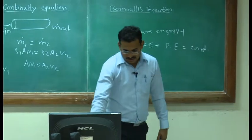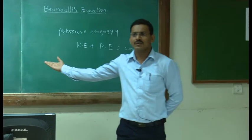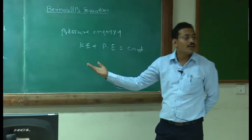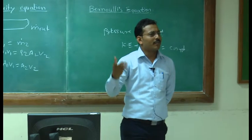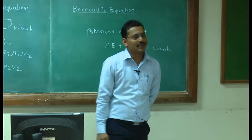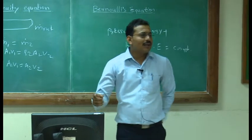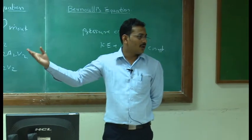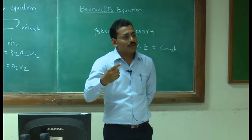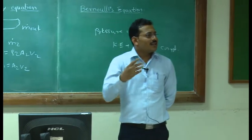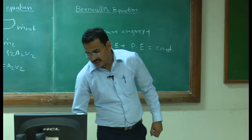To summarize: the continuity equation states that A1*V1 = A2*V2, meaning mass flow rate is constant. Bernoulli's equation states that total energy is constant. Applications include the flying of an aeroplane and the venturimeter. There are useful links available, including a SWAM portal link which you can copy and visit to learn more objective content on this topic. In the next lecture, we will solve some problems based on these things. This is the end of the session. Thank you.